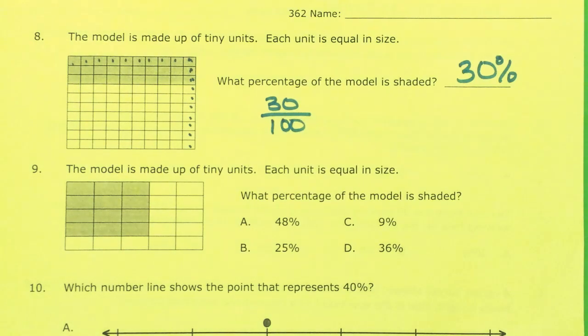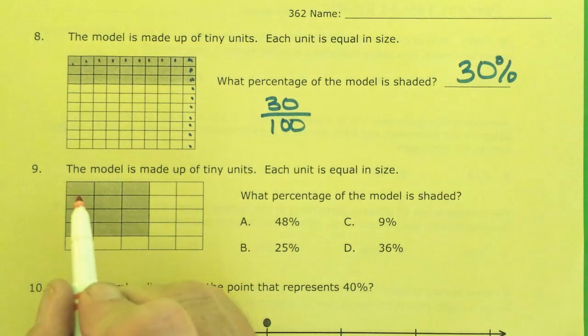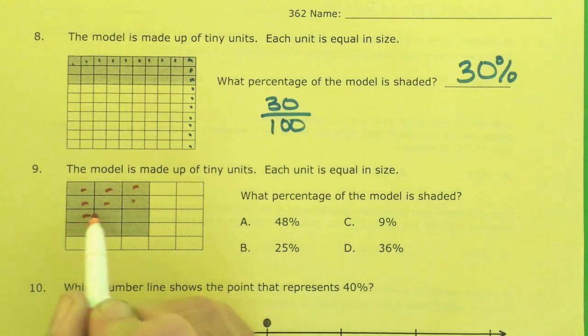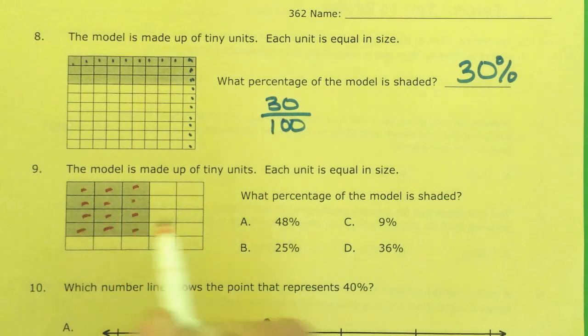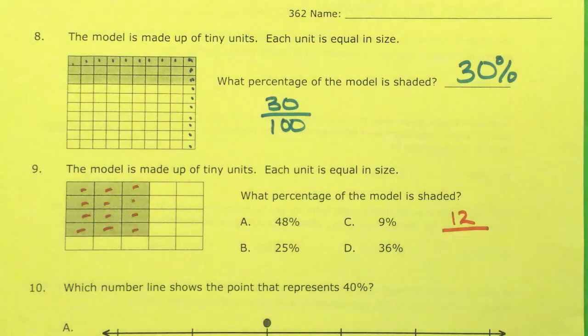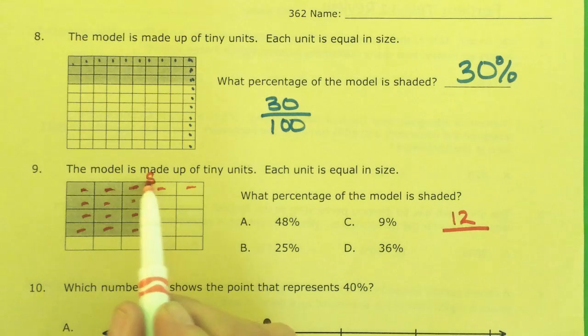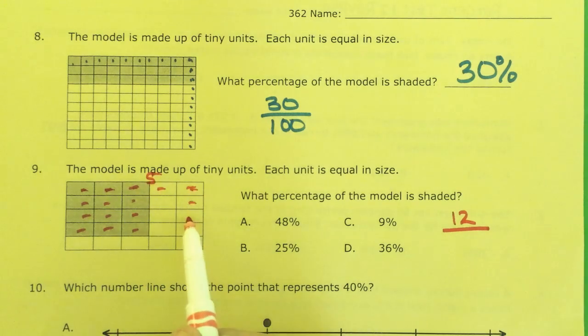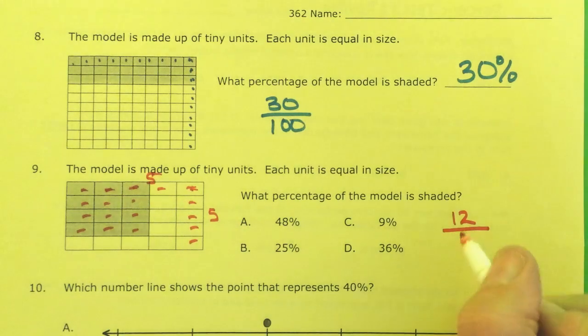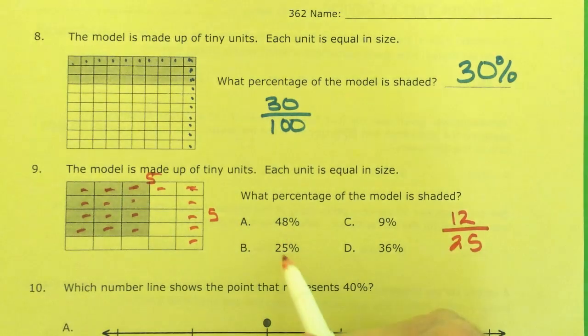Number 9. The model is made up of tiny units. Each unit is equal in size. What percentage of the model is shaded? Let's count the shaded. 1, 2, 3, 4, 5, 6, 7, 8, 9, 10, 11, 12. 12 are shaded out of how many total? 5 across, 5 down. So 5 by 5, that's 12 out of 25. But we know percents are not out of 25. They're out of 100.